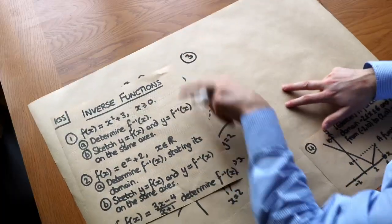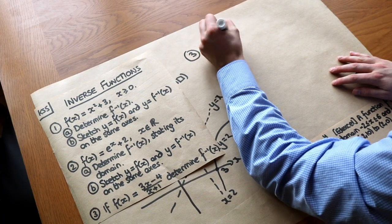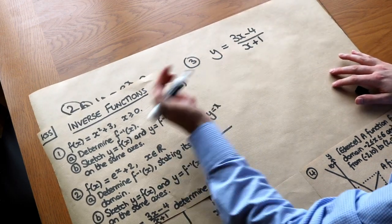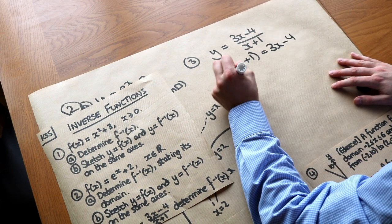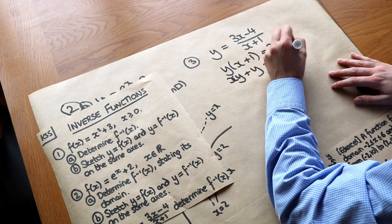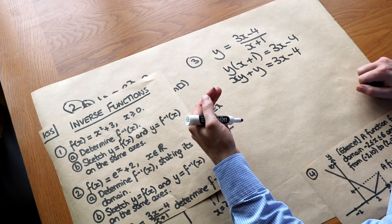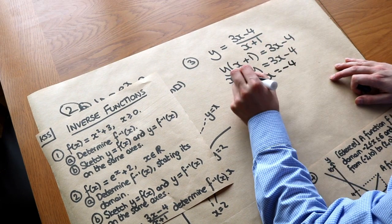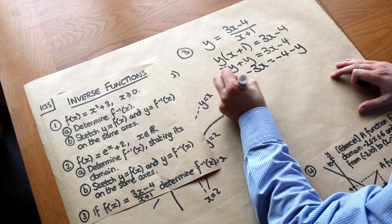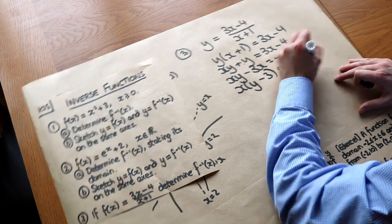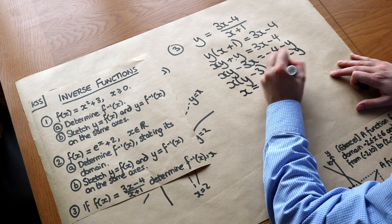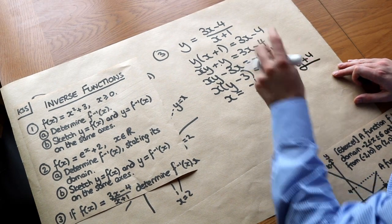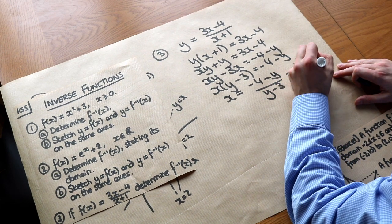For question 3: if f(x) = (3x − 4) / (x + 1), determine the inverse function. We write y = (3x − 4) / (x + 1). This is a more challenging change-of-subject problem. Multiply both sides by (x + 1): we get xy + y = 3x − 4. To make x the subject, isolate all x terms on one side — subtract 3x and subtract y — giving xy − 3x = −4 − y. Factorise out x: x(y − 3) = −4 − y.